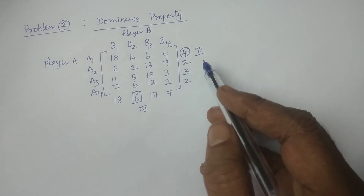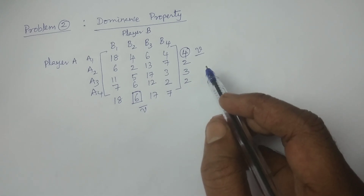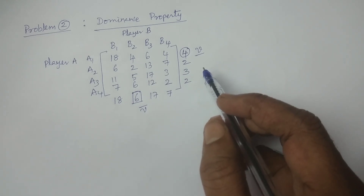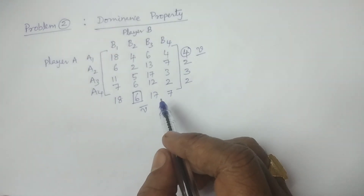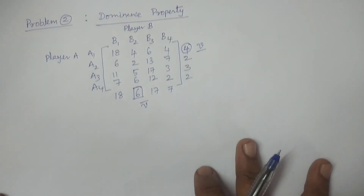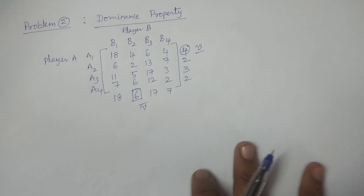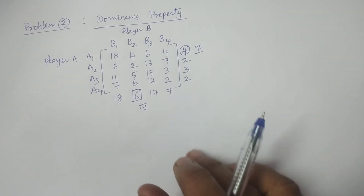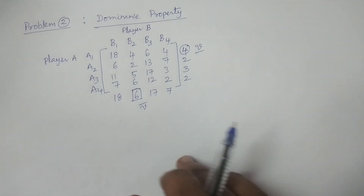Therefore, we have to proceed further using a particular principle to calculate the value of the game and optimal strategies. By using the dominance principle, we can now proceed. So now we compare the strategies, and first of all I am considering the strategies of Player B.